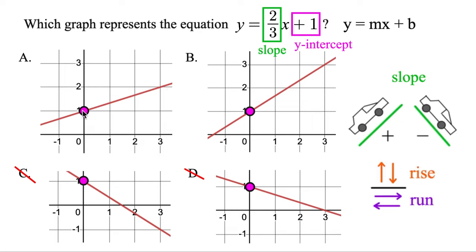The question is, how do we go from this point to this point? We go up or down first — in this case, we go up one. Then we go to the right: one, two, three. So we have a slope of one over three, rise over run.